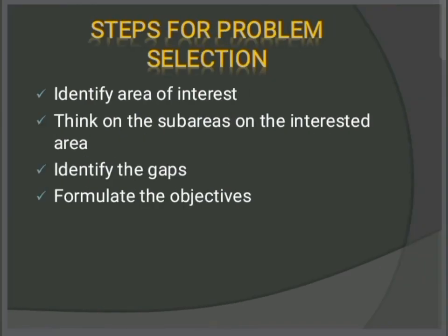Now let's look at the steps for research problem selection — how we can select our research problem. The most important first step is identifying your interest area. The researcher must identify in which area they have an interest. For example, if I have an interest in literature, then I must do research in the literature field. Finding the area of interest is an important first step for the researcher.